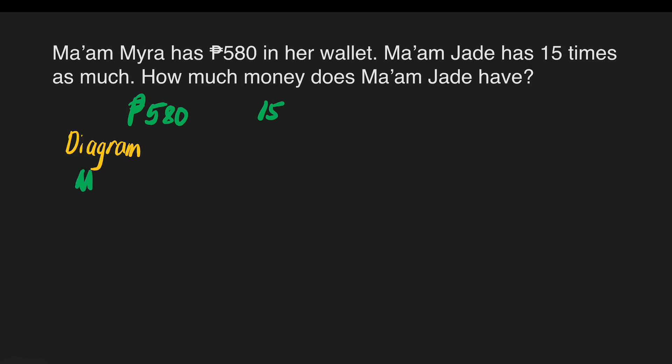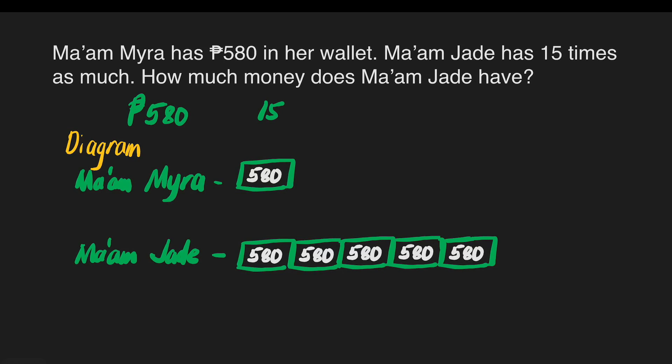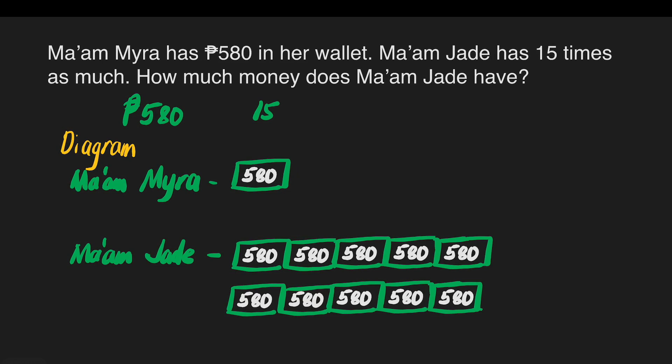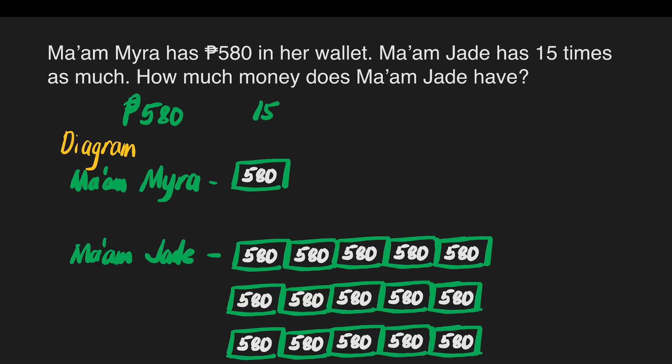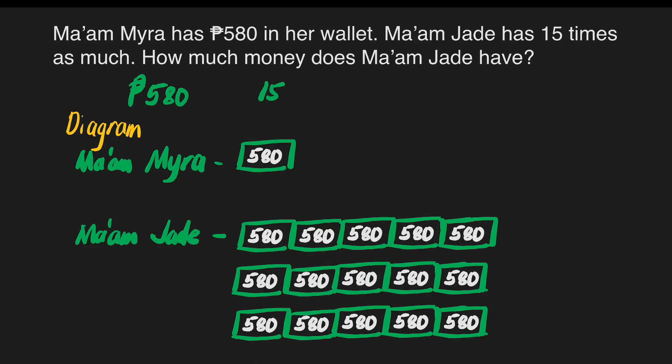Mom Mayra has 580 pesos in her wallet. For Mom Jade, we draw 15 boxes with 580 in each box, since she has 15 times as much. We're supposed to add 580 fifteen times, but we can just multiply 580 times 15 to make our work faster.